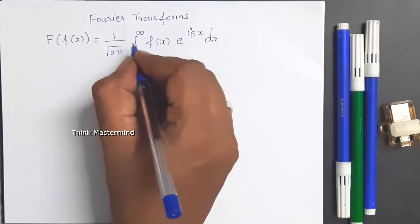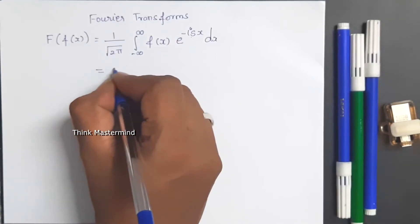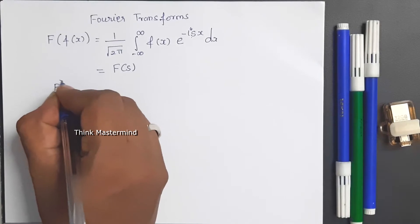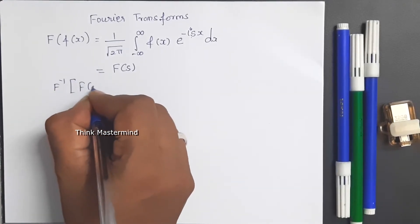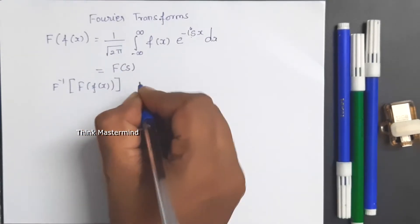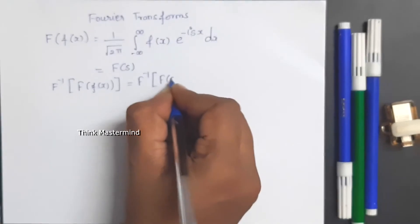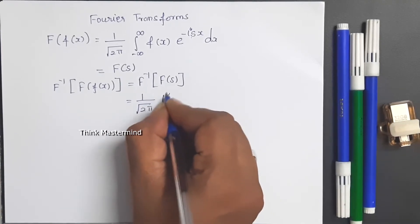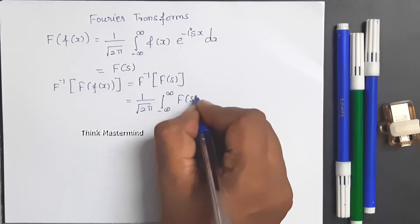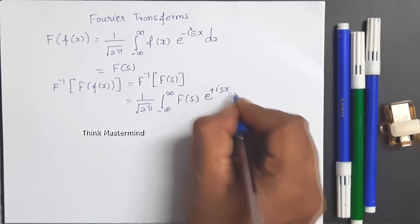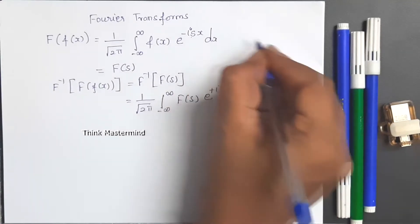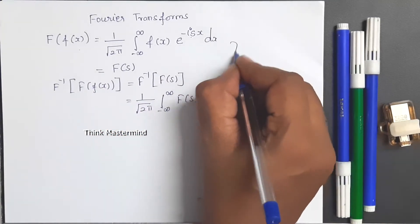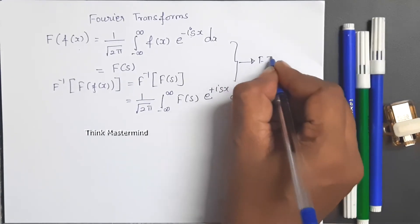Here s is a parameter. You are finding this integral value and your outcome should be a function of s, denoted as F(s). Similarly, the Fourier inverse transform of F(s) is equal to 1 over √(2π) times the integral from minus infinity to plus infinity of F(s) · e^(+isx) ds. The Fourier transform formula and the inverse transform formula together are called the Fourier transform pair.